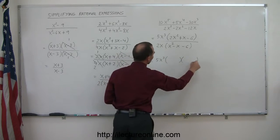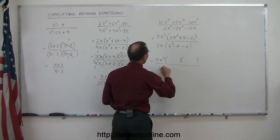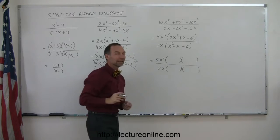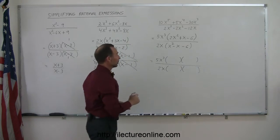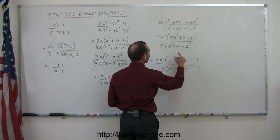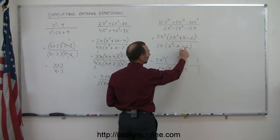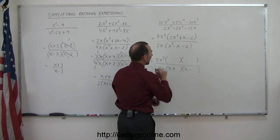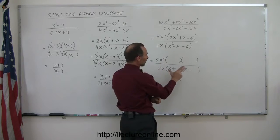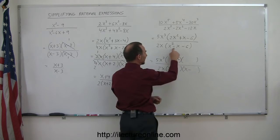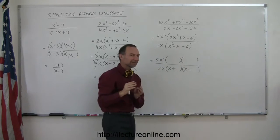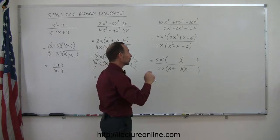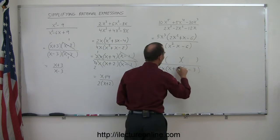I now have to rewrite the whole thing with numerator and denominator fully factored: 5x³ times the product of two binomials, divided by 2x times the product of two binomials. The denominator (x² - x - 6) is relatively easy to factor. We need an x and an x, and the signs have to be positive and negative. I'm looking for two numbers: when I multiply I get -6, and when I add I get -1 — meaning the negative number is one bigger than the positive. That would be -3 and +2.